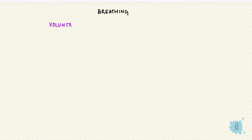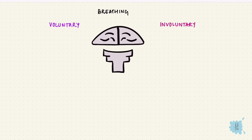Breathing is both voluntary and involuntary. Voluntary control is by the cerebral cortex. Involuntary or automatic control is by the respiratory centers in the brainstem.